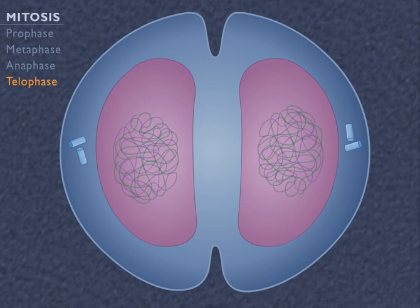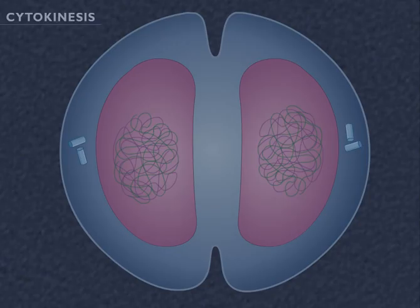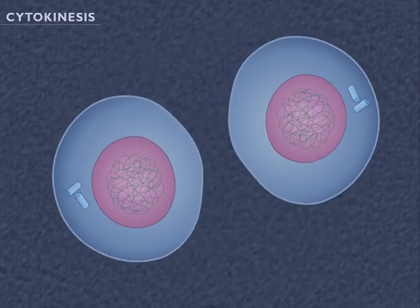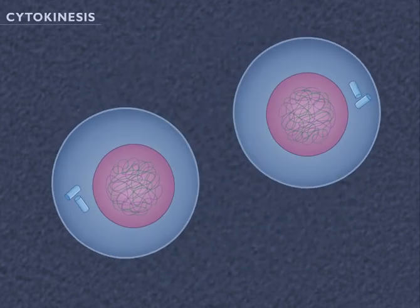The division of the cytoplasm and organelles is called cytokinesis, or the C phase. The result of mitosis and cytokinesis is the formation of two genetically identical cells.